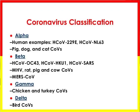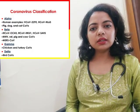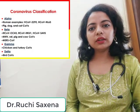Getting into the classification, viruses are of four major types: alpha, beta, gamma, and delta. Alpha and beta coronaviruses majorly infect mammals, while gamma and delta coronaviruses majorly infect birds. Based on this classification, we have seven types of coronaviruses in more detailed categorization.